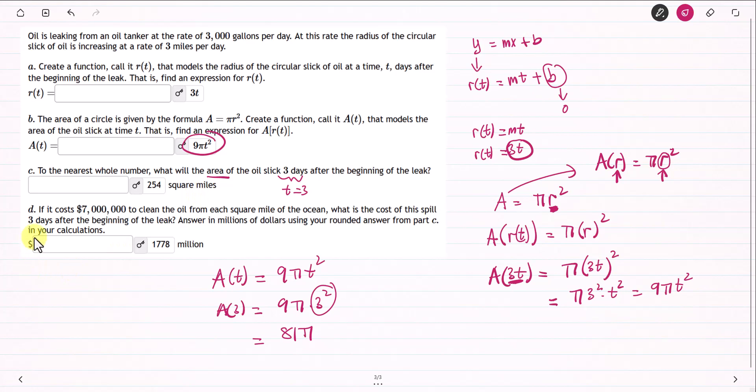Last question. If it costs 7 million to clean the oil from each square mile of the ocean, what is the cost of this spill 3 days after the beginning of the leak? Answer in millions of dollars using your rounded answer from part C in your calculation.